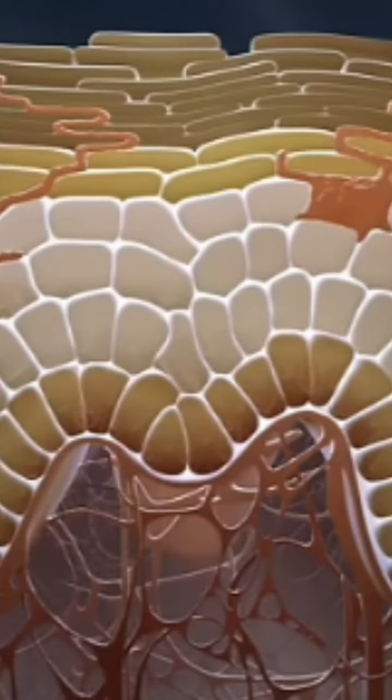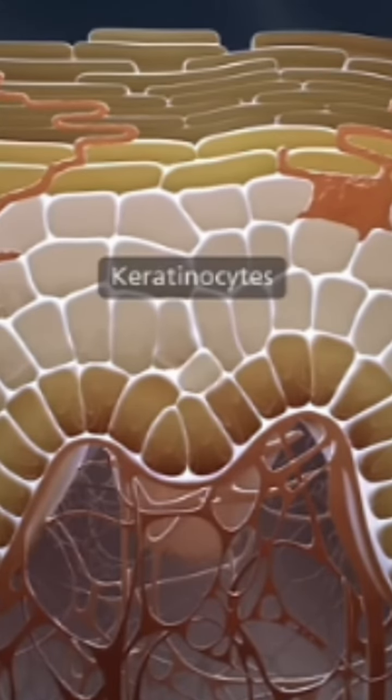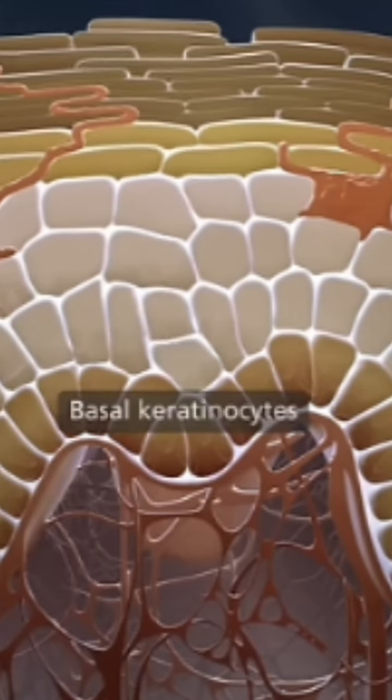The epidermis is composed of highly specialized epithelial cells known as keratinocytes. They are continuously replenished from just one layer of basal keratinocytes, which divide frequently.